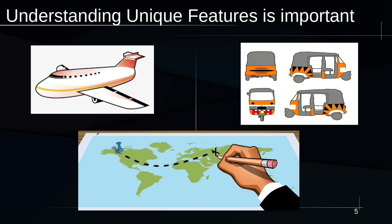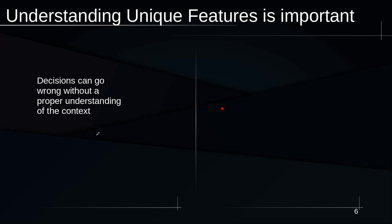Are there any problems when we do not know the unique features? There are many cases where our decisions can go wrong when we do not have a proper understanding of the context. Here's a small example: last summer I watched a lot of police movies and got very inspired by them. As a teacher, I tried to learn a few lessons from them.